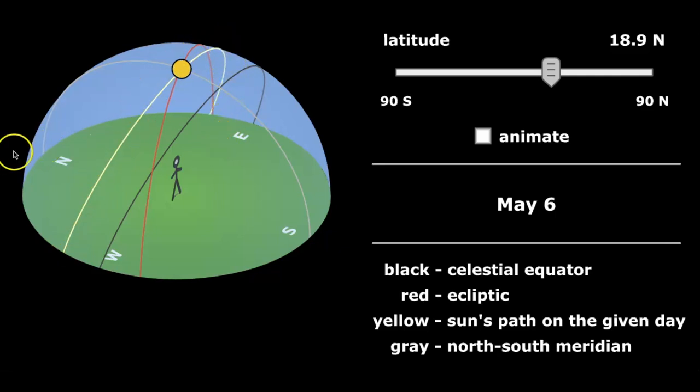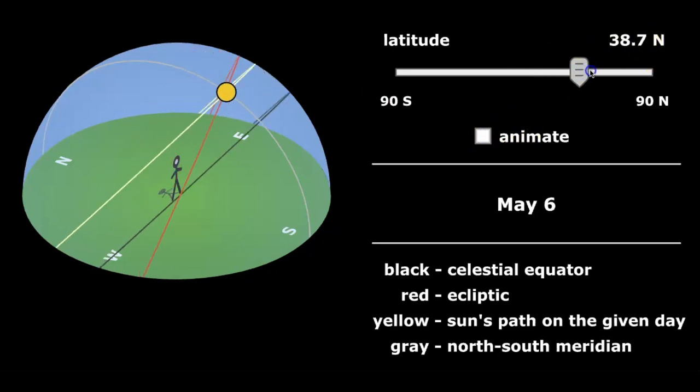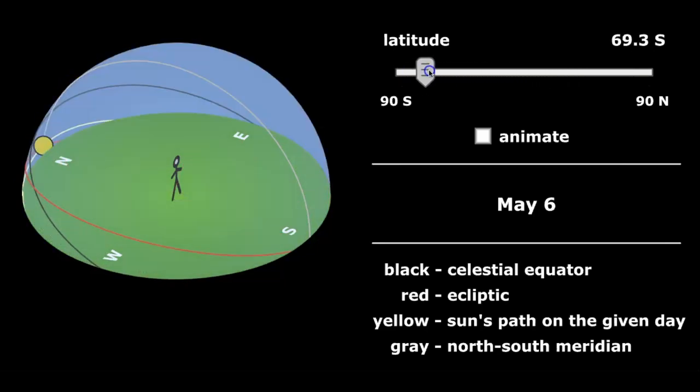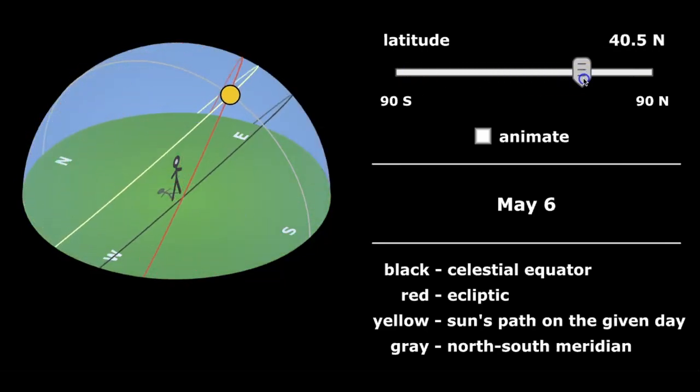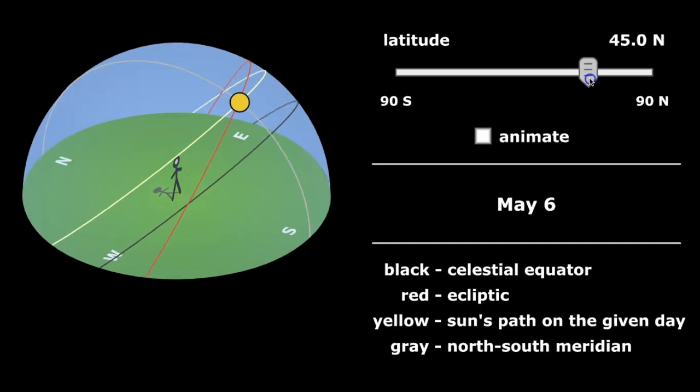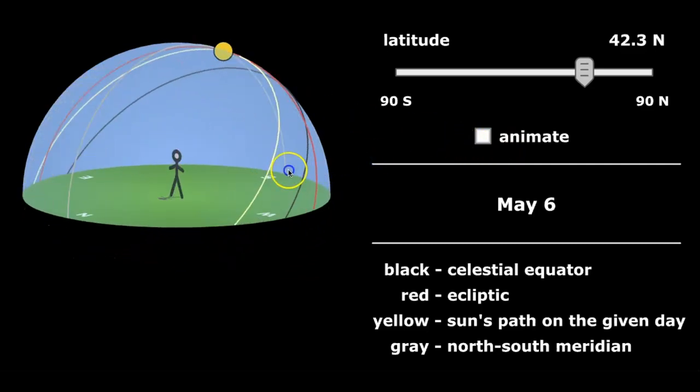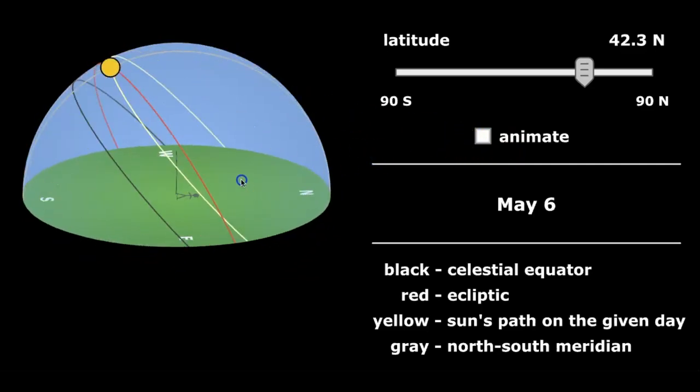Okay, so I'm going to hit animate and notice where my location is. So if you change your location on the earth, the sun's path will also change as well. So this is about where I am right now as I'm recording this. So you can see, you can also spin this around, which is very helpful. And I'm going to hit animate. So let's just watch what the sun does.